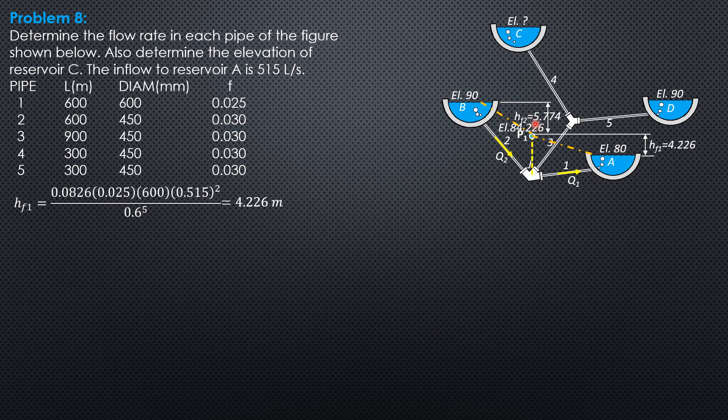Then, knowing the head loss in pipe 2, we can compute the discharge in pipe 2. This is also Q3. So 5.774 equals 0.0826, 0.03, length 600, Q2 squared over diameter 0.45 raised to 5. So the discharge in pipe 2 is 0.2677 cubic meter and it is out.